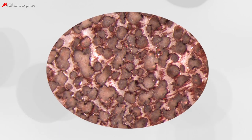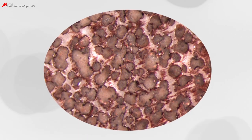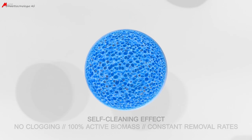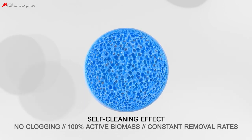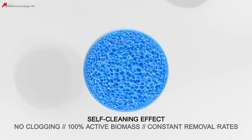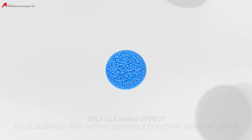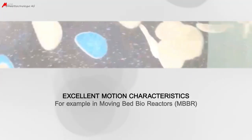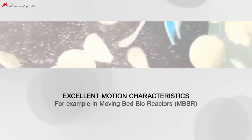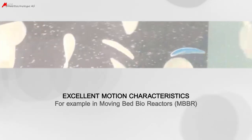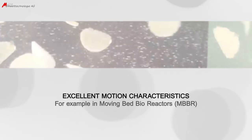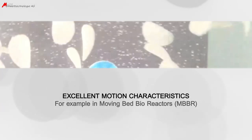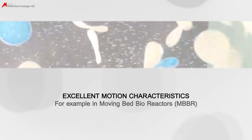The pore system of the Mutag Biochip is completely filled with biomass, and all this biomass is active and alive. The Mutag Biochip provides a self-cleaning effect, which ensures that clogging simply cannot happen. Due to their specific shape and light weight, the Mutag Biochip carriers provide excellent motion characteristics, and once the carriers collide with each other or with the tank wall, any excess biomass trying to grow out of the pores will be sheared off — the self-cleaning effect.